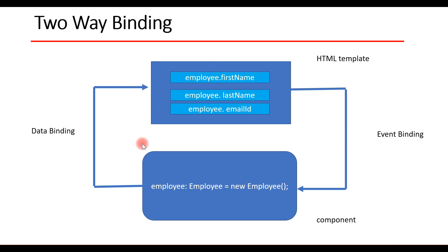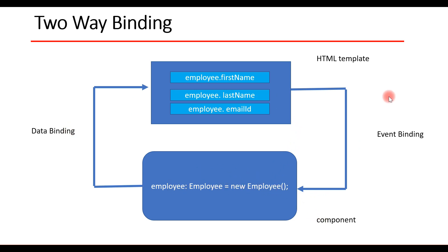This is how two-way binding works in Angular. We have data binding and event binding. Whenever we define properties in the component class and bind those properties in the component template, it is called property binding or data binding — we use Angular interpolation for this. When we perform some events on the HTML template, those should be bound in the component class using methods or functions.